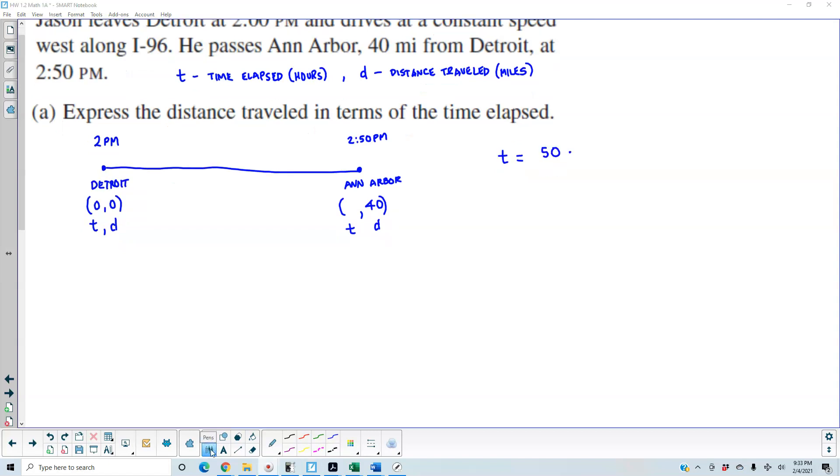We want to convert this to hours. We know that we have 1 hour per 60 minutes. If we want to convert this into hours, that's going to be 50 over 60, and we can reduce that to 5 over 6 hours. So that means this point is going to be 5 over 6.